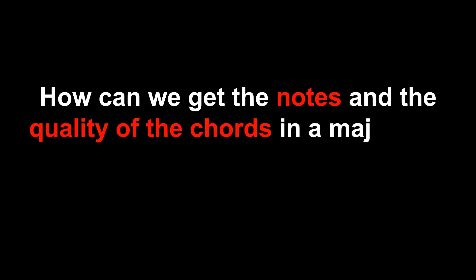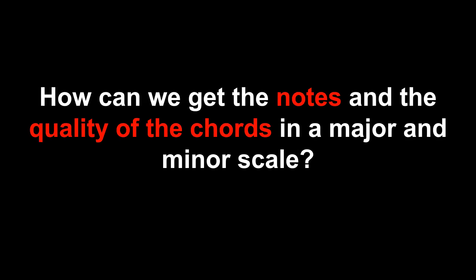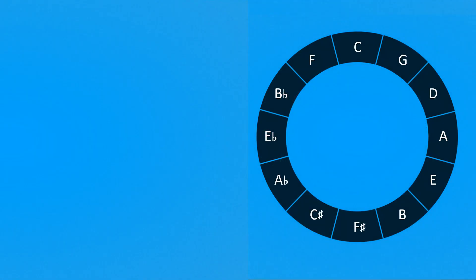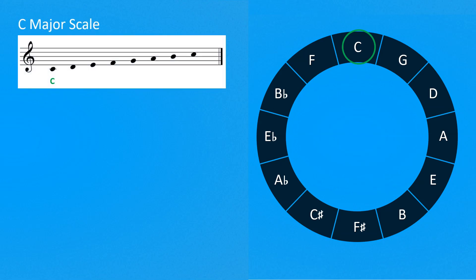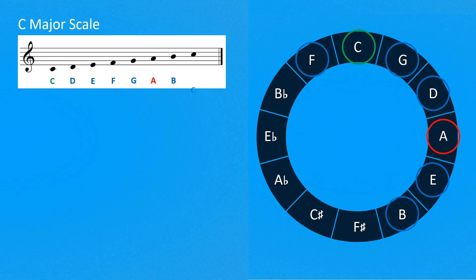How can we get the notes and the quality of the chords in the major and minor scale? Another piece of information we can obtain from the circle of fifths are the notes that belong to the scale — major and the relative minor. Let's start from the root note C and look at the C major scale. The C major scale is formed by C, D, E, F, G, A, B, and then back to C.